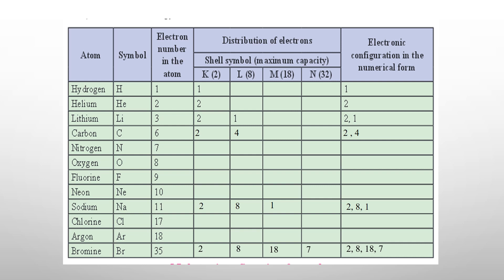Now you are going to solve electronic configuration — not only the blank atoms in the table, but in your rough books solve everything from hydrogen to bromine, both what was solved in this video and what was not. Understanding this concept is very important because the next concept — valence electrons — depends on it. So start solving now. If you have any doubts, they will get cleared as you practice. Thank you.